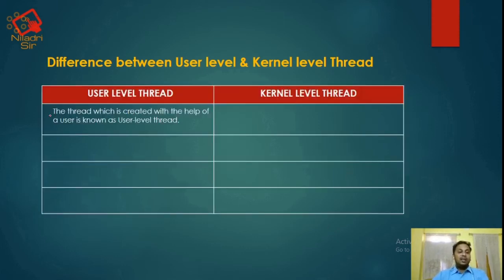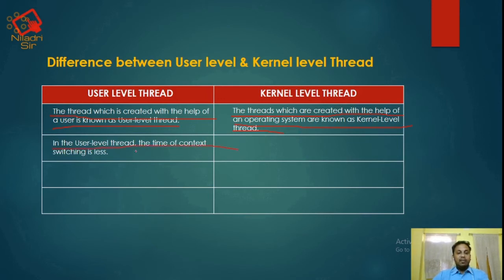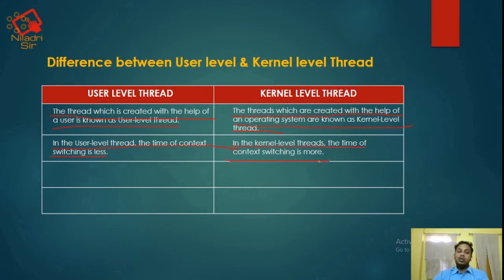Next, differences between user-level threads and kernel-level threads. Threads created with the help of a user are known as user-level threads. Threads created with the help of an operating system are known as kernel-level threads. Context-switching time is less for user-level threads, but more for kernel-level threads.